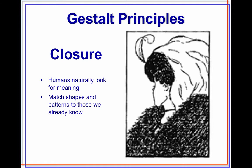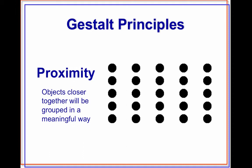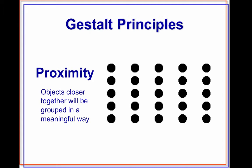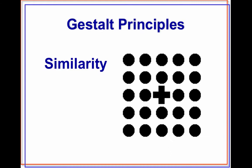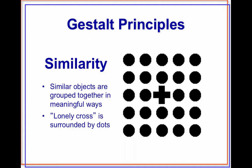Another Gestalt principle is called proximity — objects closer together will be grouped in a meaningful way. For example, here we see rows of dots. We don't see individual dots, but we see five rows of five dots. Similarity is also important. When we group similar objects, they are meaningful to us. Here we see a lonely cross surrounded by dots, which may remind us of a graveyard.